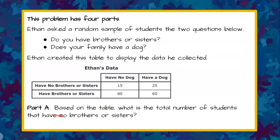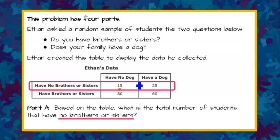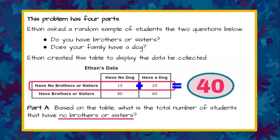Part A. Based on the table, what is the total number of students that have no brothers or sisters? Please pause now. Welcome back. We're going to go to our table and find the total number that have no brothers or sisters. We have 15, add the 25, so we know that the total number of students surveyed is 40 that answered they have no brothers or sisters.